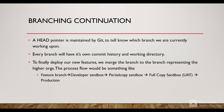Git maintains a HEAD pointer to point to the current working branch. If we have a master branch and a feature branch, and we're currently on the feature branch, HEAD will point to that branch. Using 'git checkout' to move back to master shifts HEAD to master. Every branch has its own commit history and working directory, so changes made in the feature branch won't be present in the master branch.